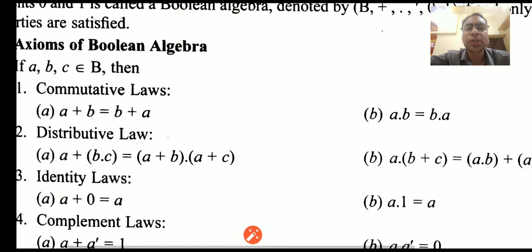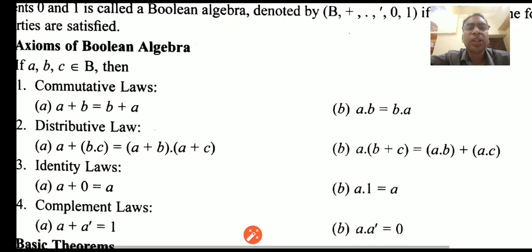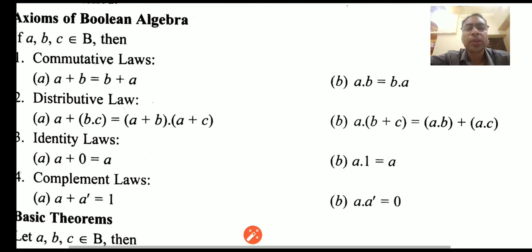The second law is the distributive law. There are two forms: one for the plus operator over dot, and another for the dot operator over plus. So, a plus (b dot c) is equal to (a plus b) dot (a plus c), and a dot (b plus c) is equal to (a dot b) plus (a dot c).